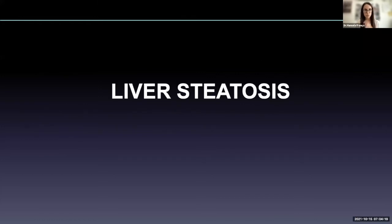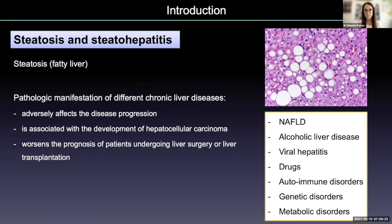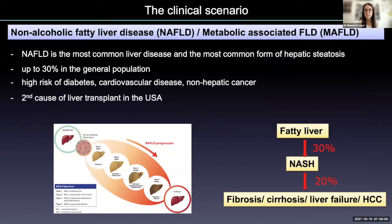Starting with liver steatosis — fatty accumulation in the liver. Steatosis is a common pathological manifestation in different chronic liver diseases from different etiologies, and it might affect disease progression. It is associated with the development of HCC, and it may also worsen the prognosis of patients undergoing liver surgery or liver transplantation. Among the different etiologies, we have non-alcoholic fatty liver disease or metabolic-associated fatty liver disease, the most common liver disease in western countries.